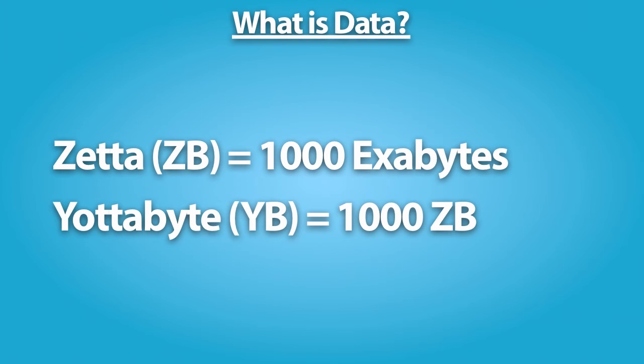A zettabyte is 1,000 exabytes — not a lot to compare it to, but it would certainly take a whole lot of ones and zeros to fill it up. And finally, a yodabyte, which is 1,000 zettabytes. It is estimated the entire Internet takes up about one yodabyte.